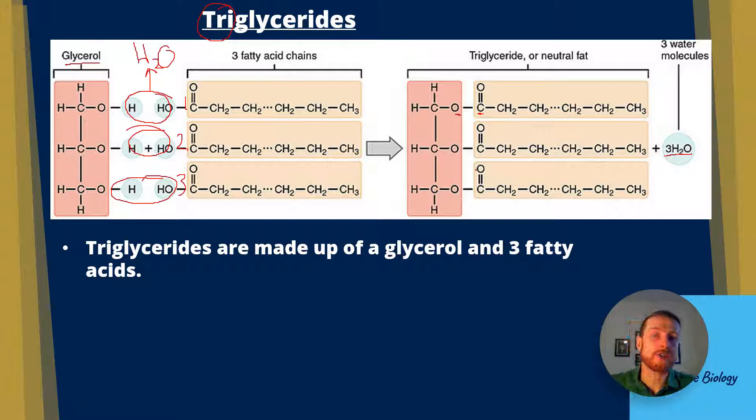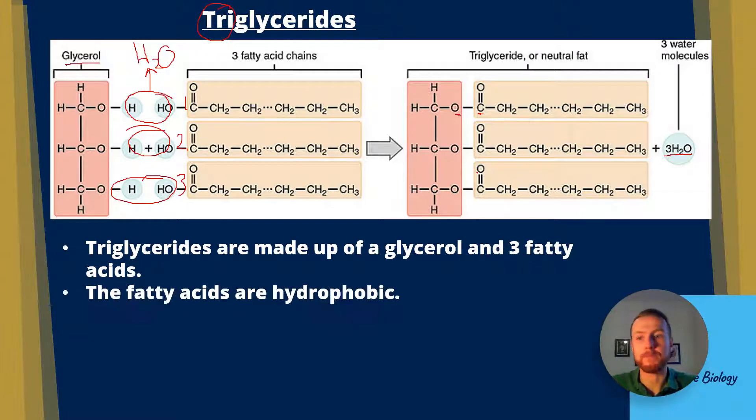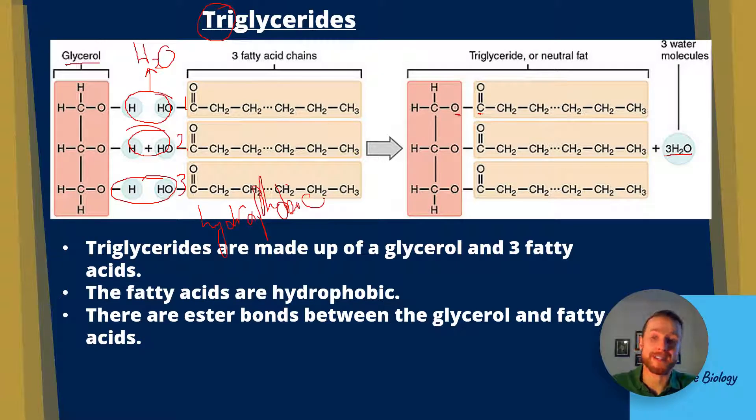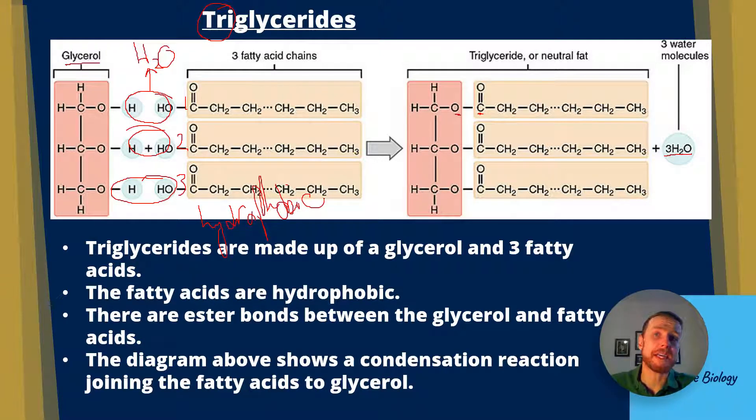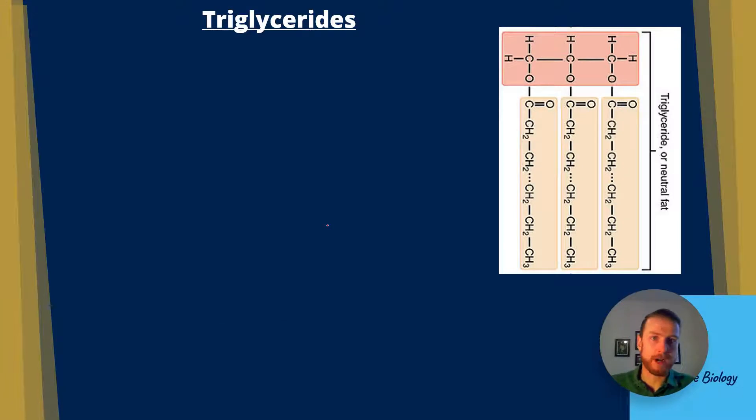To summarize, triglycerides are made of three fatty acids and a glycerol. The fatty acids are hydrophobic, so this region is hydrophobic. There are ester bonds between the glycerol and fatty acids. The diagram above shows a condensation reaction, which you need to know about for A-level biology. So we've got our triglyceride at the top. Now, what are they all about?